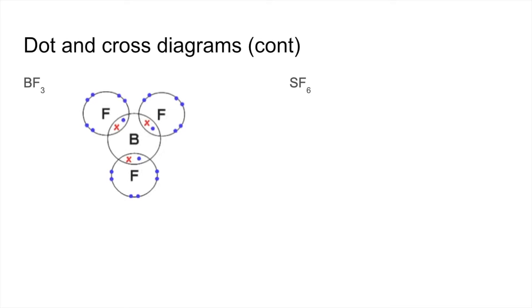There's the dot and cross diagram there. The unusual thing about that is there are only six electrons around the outer shell of boron, the valence shell. That's actually still stable because boron has formed the maximum number of bonds it can.